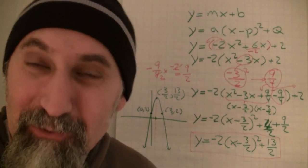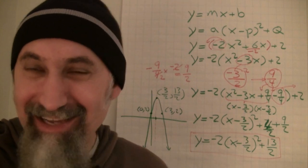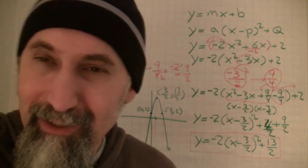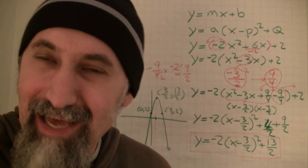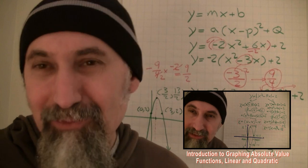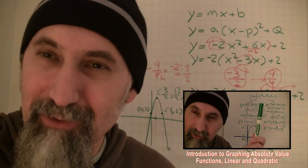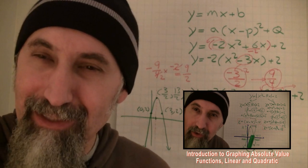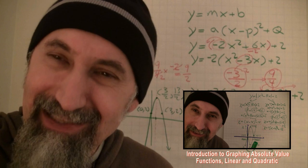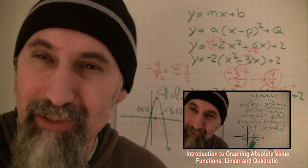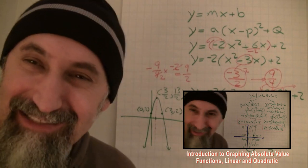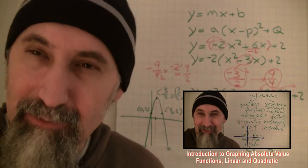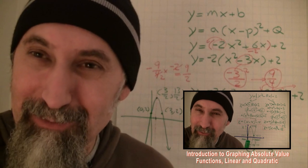I just wanted to show how we end up graphing a quadratic function. Now I'm going to do a simpler one, and what we're going to do is graph the absolute value of a quadratic function, because I love the way that thing looks. It sort of mimics what we have to do when graphing the absolute value of linear functions, but it's just one more step up — a little bit more complicated because now we're dealing with quadratics, not linear functions.